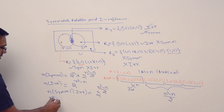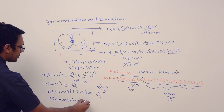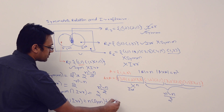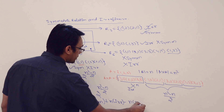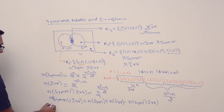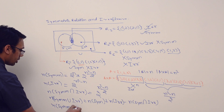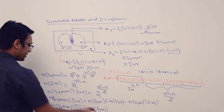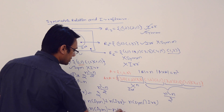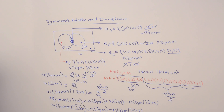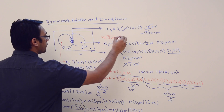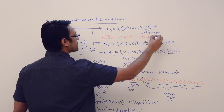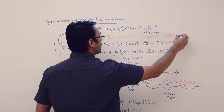The number of relations which are symmetric or irreflexive is: |symmetric| + |irreflexive| − |symmetric and irreflexive|. Similarly, the number of relations which are symmetric but not irreflexive is: |symmetric| − |symmetric and irreflexive|. And the number of relations which are irreflexive but not symmetric is: |irreflexive| − |symmetric and irreflexive|.